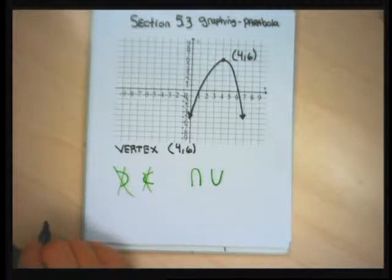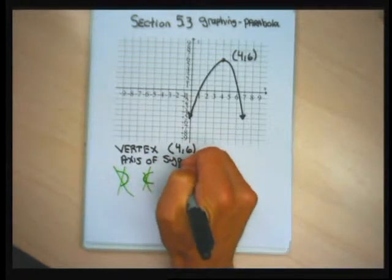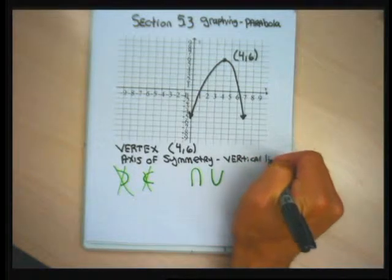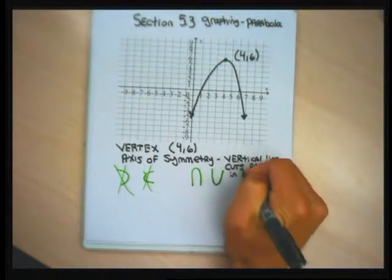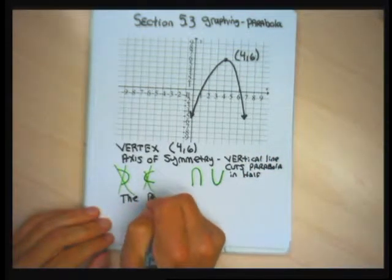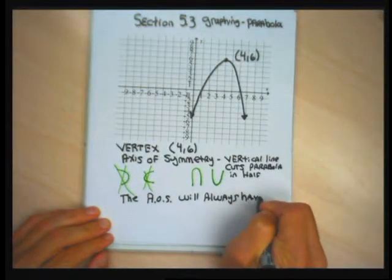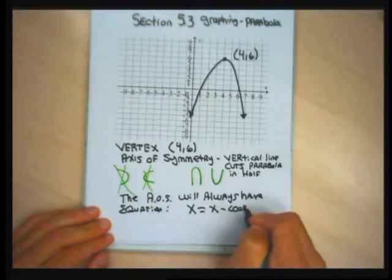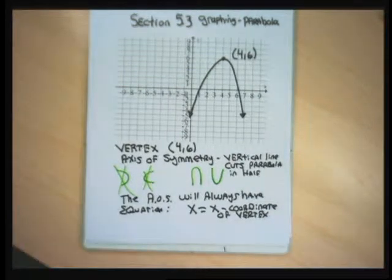There are three other features of a parabola we'll be asked to identify. One of the features is called the axis of symmetry. The axis of symmetry is a vertical line that cuts the parabola in half. The axis of symmetry, which I usually abbreviate AOS, will always have the equation x equal to the x-coordinate of the vertex.